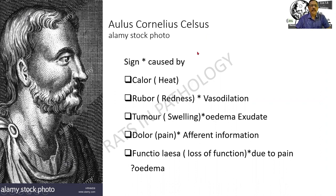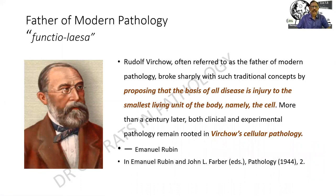Celsus was the author of the first four. He defined the terms Calor, Rubor, Tumor, and Dolor, which mean heat, redness, swelling, and pain. To which the last one, namely functio laesa, was added by Rudolf Virchow.